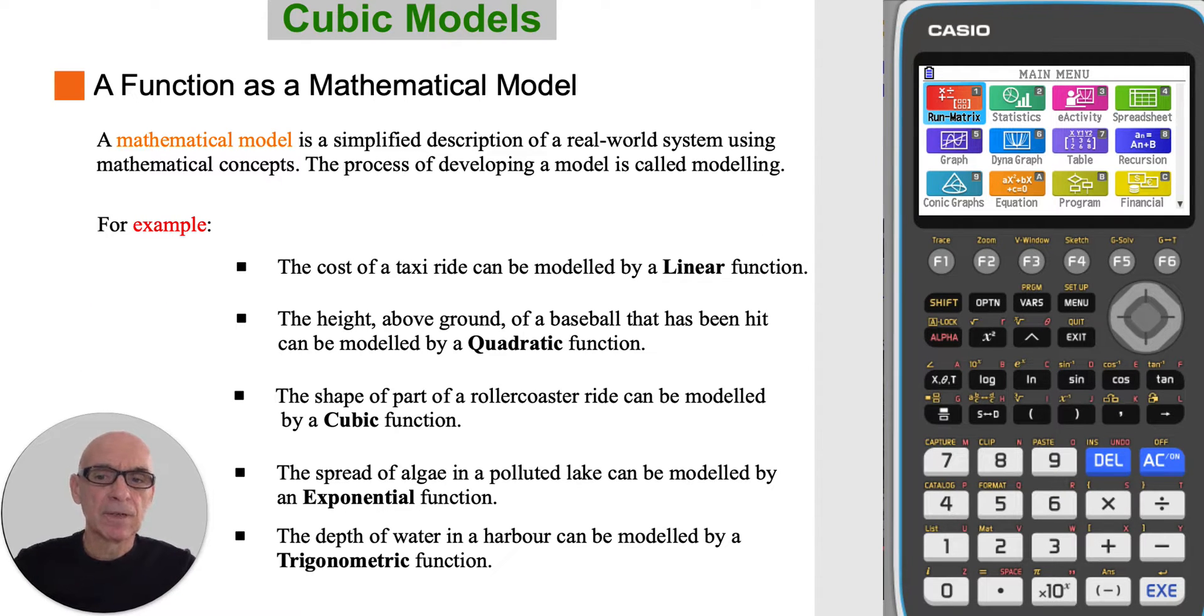A mathematical model is a simplified description of a real-world system using mathematical concepts. The process of developing a model is called modeling. For example, the shape of part of a roller coaster ride can be modeled by a cubic function.